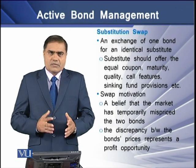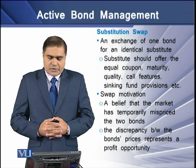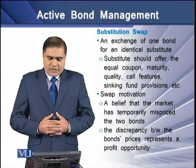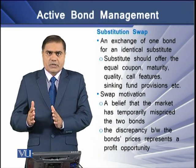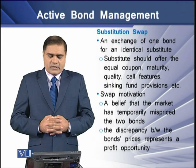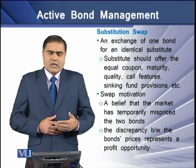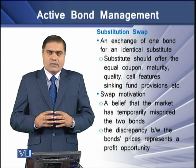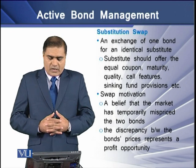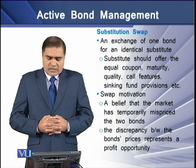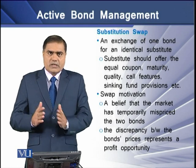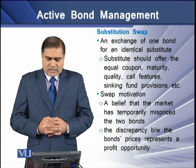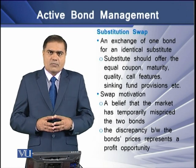The first of the four swap types is the substitution swap. This is an exchange of one bond for an identical substitute offering equal coupon rate, maturity, quality, call features, sinking fund provisions, and other attributes. The motivation is a belief that the market has temporarily mispriced the two bonds, and that the discrepancy between their prices represents a profit opportunity for the bond portfolio manager.